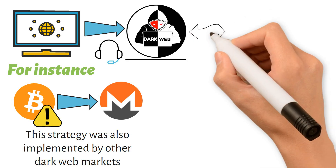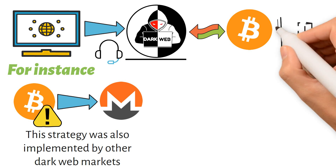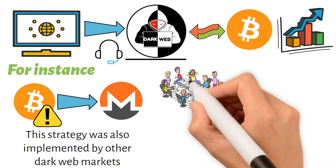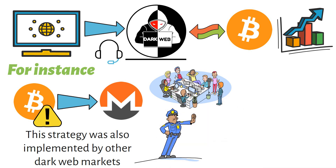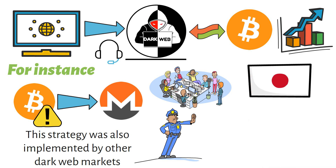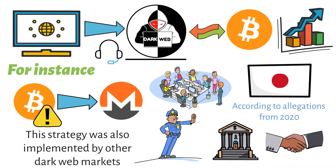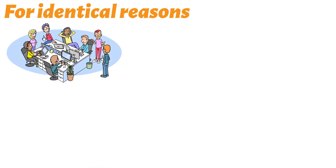On dark web marketplaces, Bitcoin is still the most often utilized digital currency. Due to its popularity and rapid growth, Monero is frequently brought up in discussions on the prohibition and regulation of similar coins. To stop money laundering and prevent organized crime, major economies like South Korea and Japan have already outlawed Monero exchanges. According to allegations from 2020, cryptocurrency exchanges were urged by Australian regulators and banks to delist XMR or face losing their bank partnerships. For identical reasons, many cryptocurrency exchanges have also decided to stop supporting Monero.